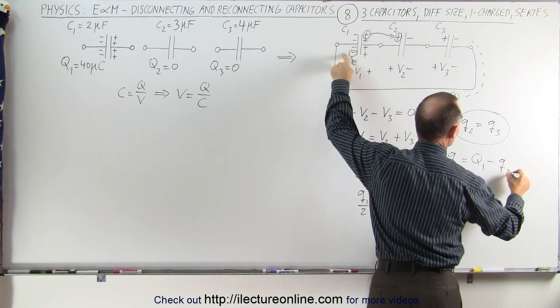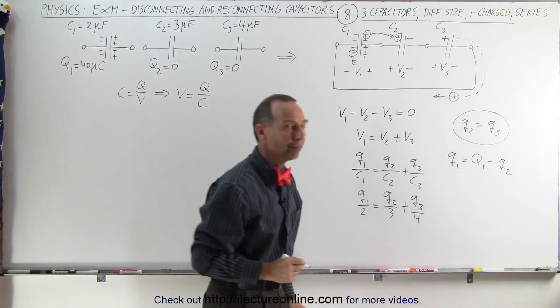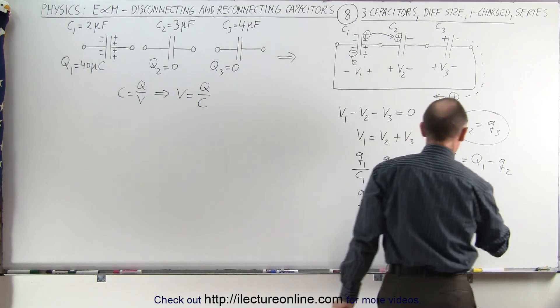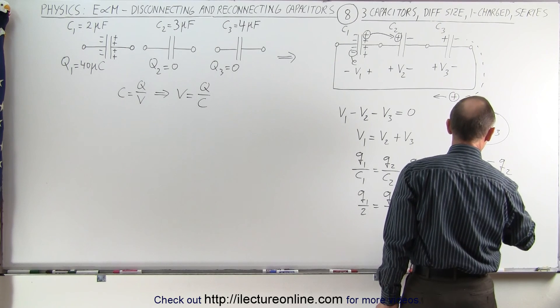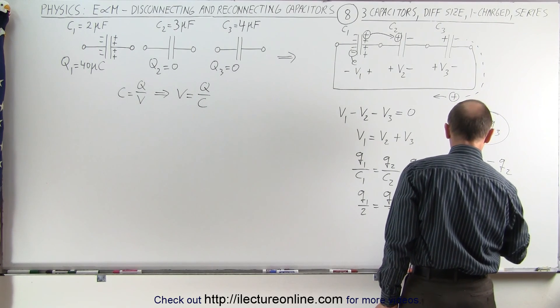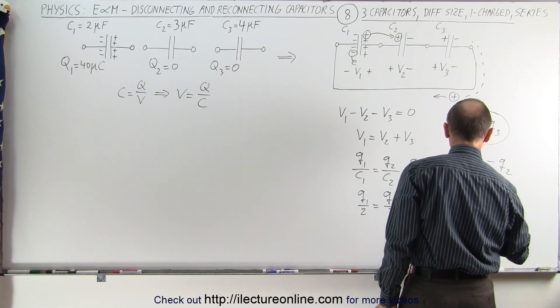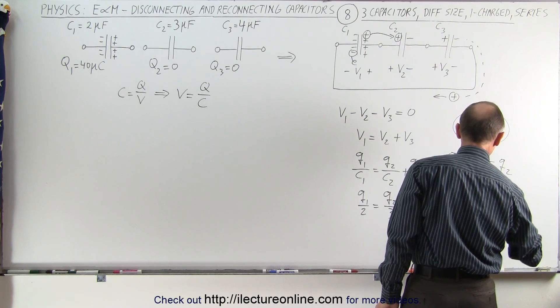And since Q1 is equal to 40, small Q1 is equal to 40 minus Q2, or we can say that Q2 is equal to 40 minus Q1.